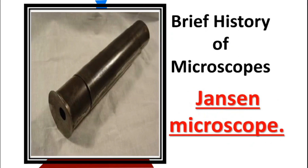The first microscope was known as the Janssen microscope. It had three draw tubes with lenses placed at the ends of the tubes. The eyepiece was biconvex and the objective was planoconvex. The microscope back then could be used to observe a sample by merely holding it and sliding the draw tubes. The Janssen microscope could magnify an image about three times when fully closed and up to ten times when extended to maximum.